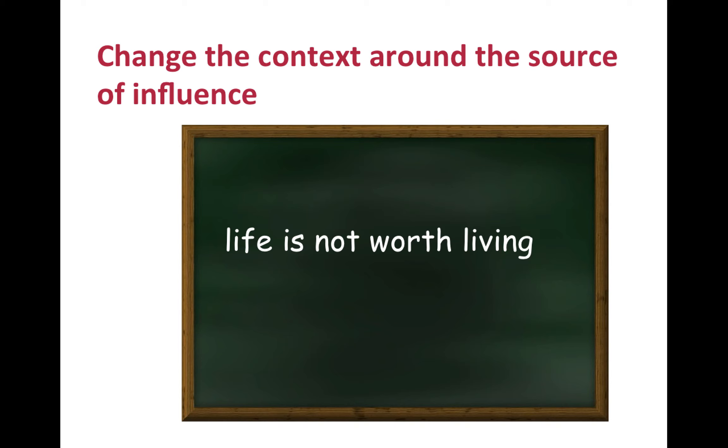The first approach, changing the context around the source of influence, can be illustrated by this example. See this sentence on the board? Take a moment to notice your reactions to it. Then notice how you react to this. So we didn't touch the original sentence, but we change the context around it. This way, we change its meaning and the impact it can have. If we do that, new responses to the original sentence can emerge.